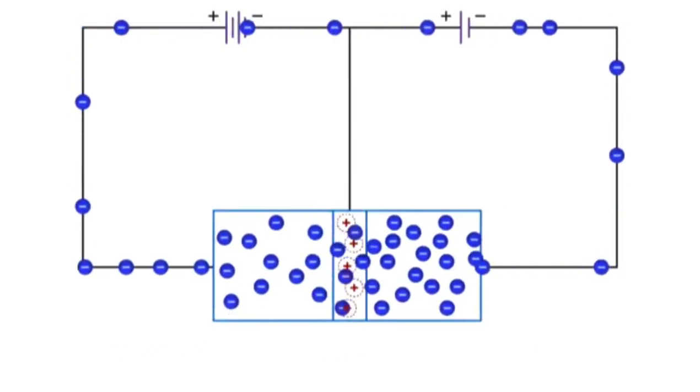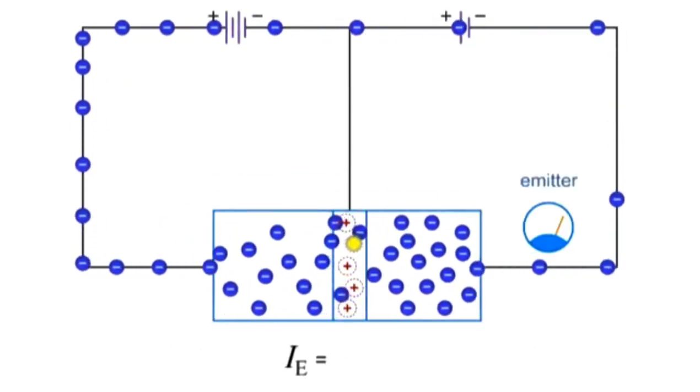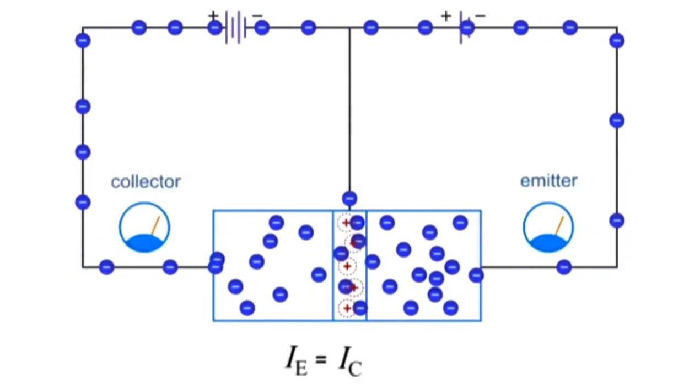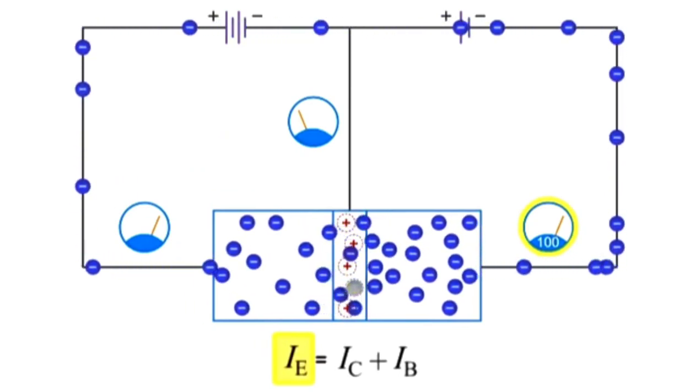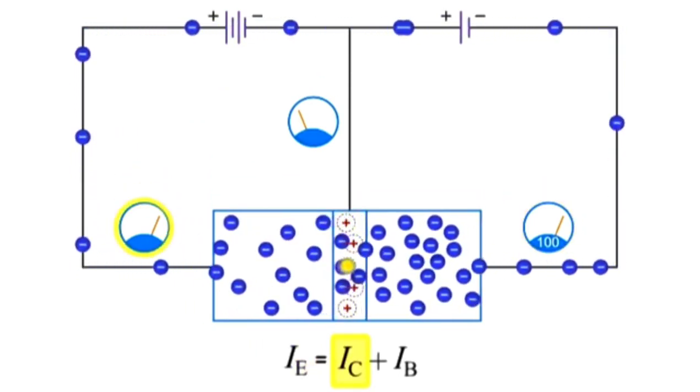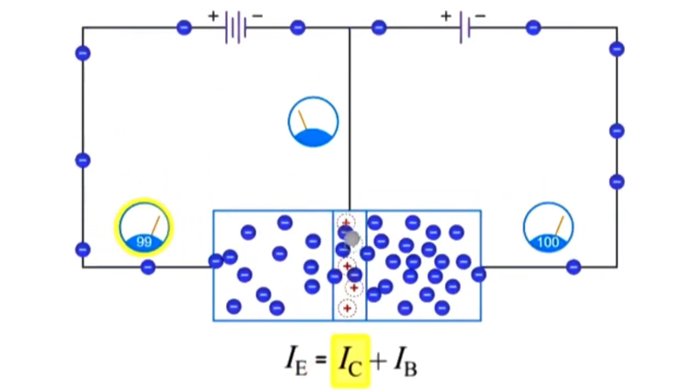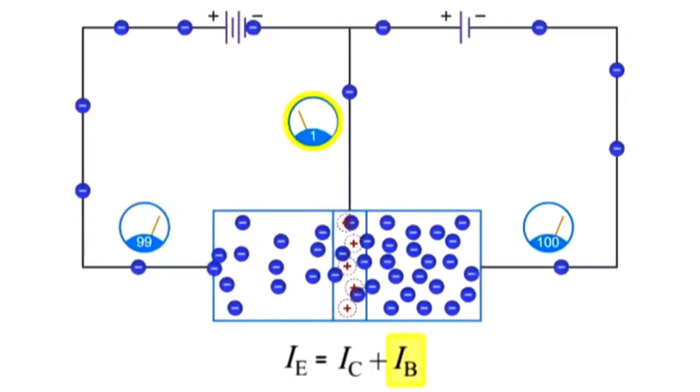In an NPN transistor, the emitter current is the sum of the collector current plus the base current. So, if you have 100 milliamps at the emitter, you will have 99 milliamps at the collector and 1 milliamp at the base.